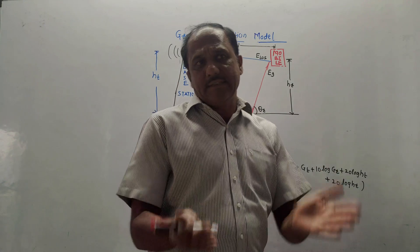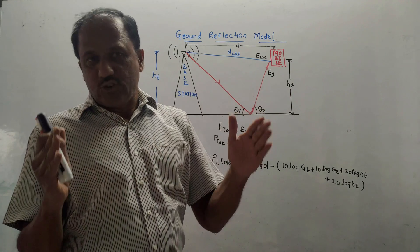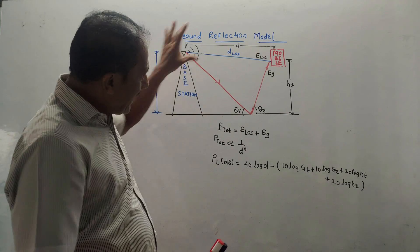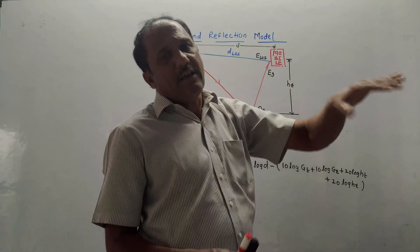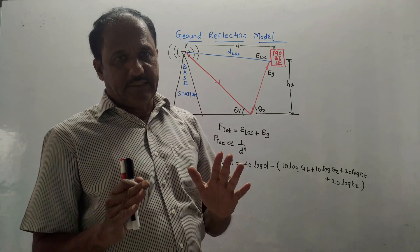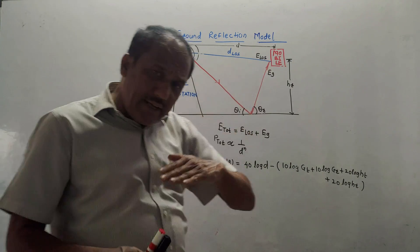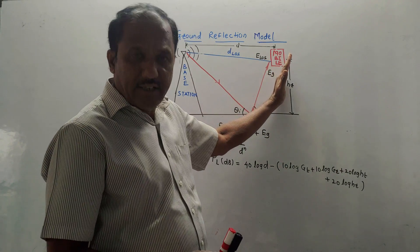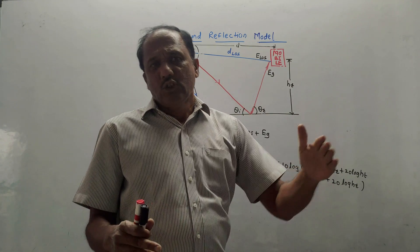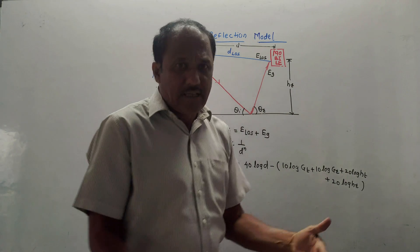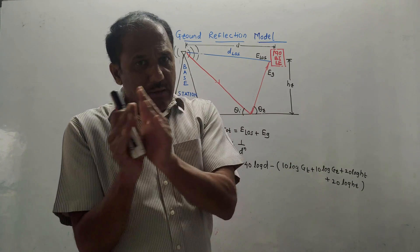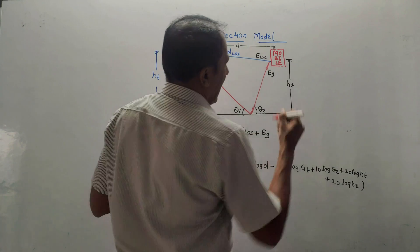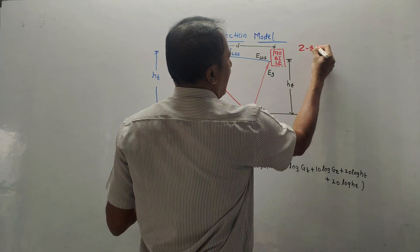What are these different models? In case of cellular network, there are two major parts: one is the base station, and another is your handset or mobile receiver which is receiving the signals. In between, there are many kinds of losses taking place when the signal reaches the mobile. To predict different kinds of losses, various mathematical models are developed. One of these models is the Ground Reflection Model, also known as the Two-Ray Model.